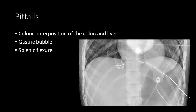Remember there are some pitfalls. The colon can sometimes become interposed between the liver and the diaphragm and can mimic free air in the right upper quadrant. In the left upper quadrant, the gastric bubble and the splenic flexure can often mimic free air. In this case, you see a very distended gastric bubble that almost looks like free air. Notice there does remain some separation between the diaphragm and that gastric bubble, and that is a normal finding.